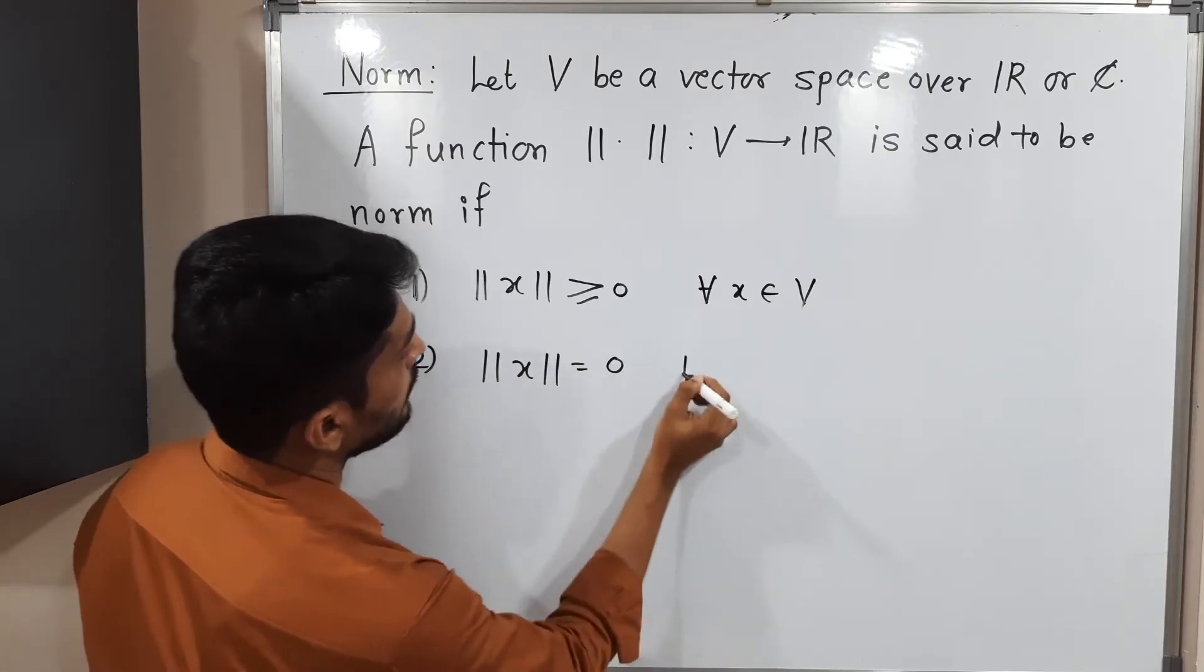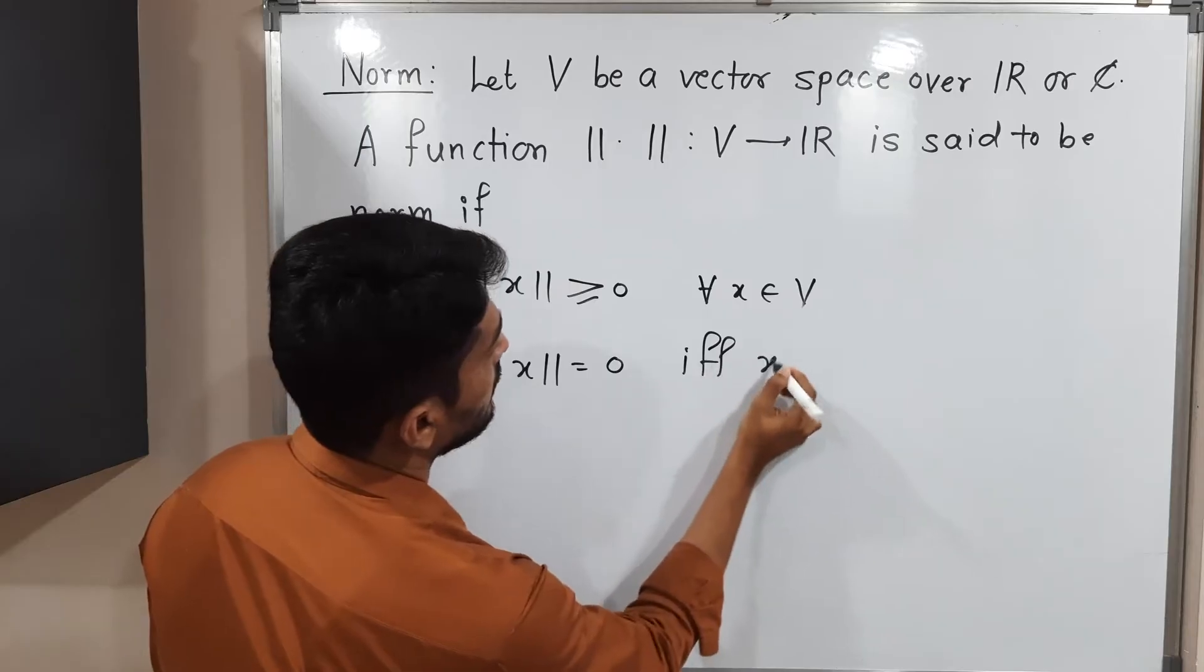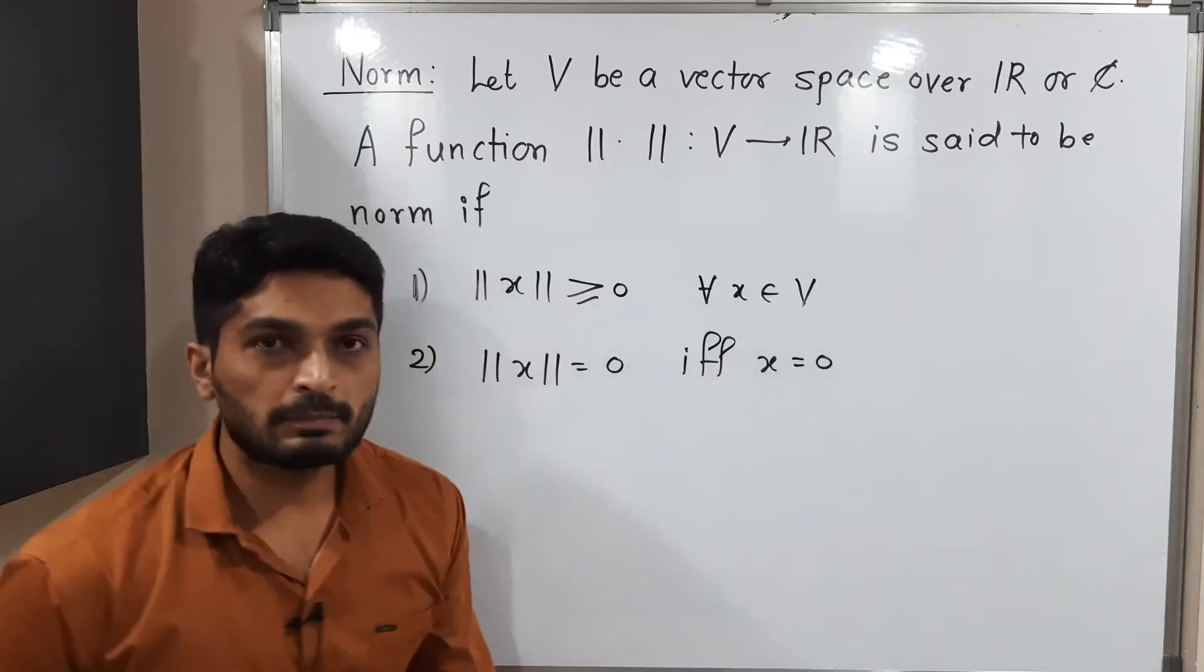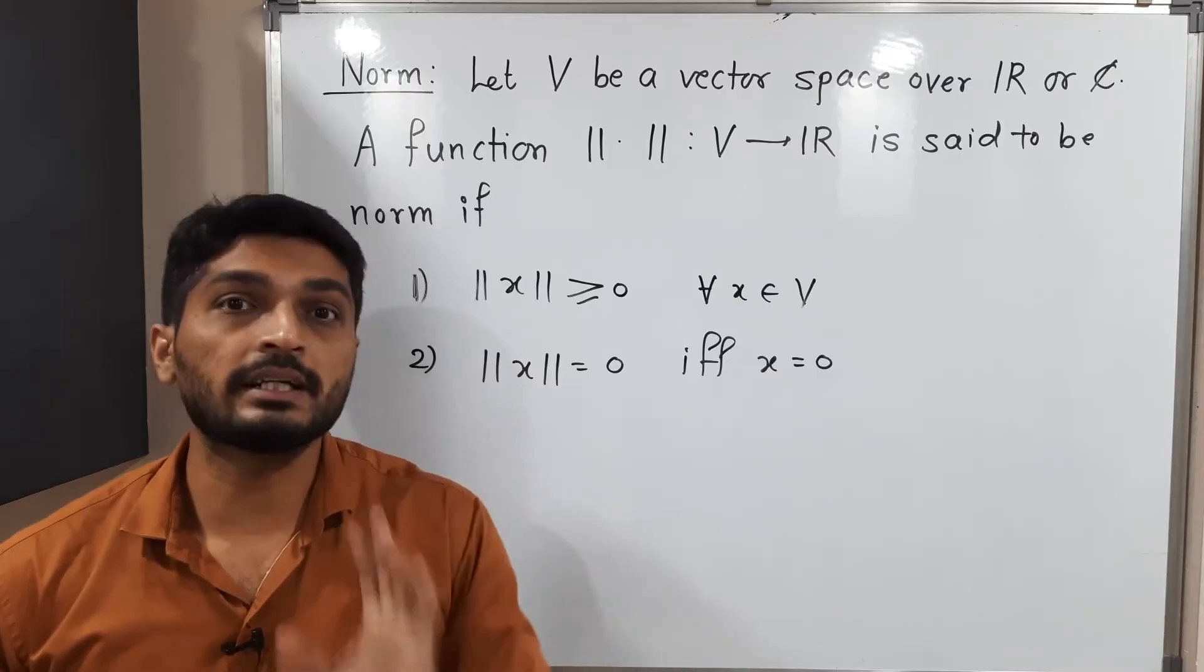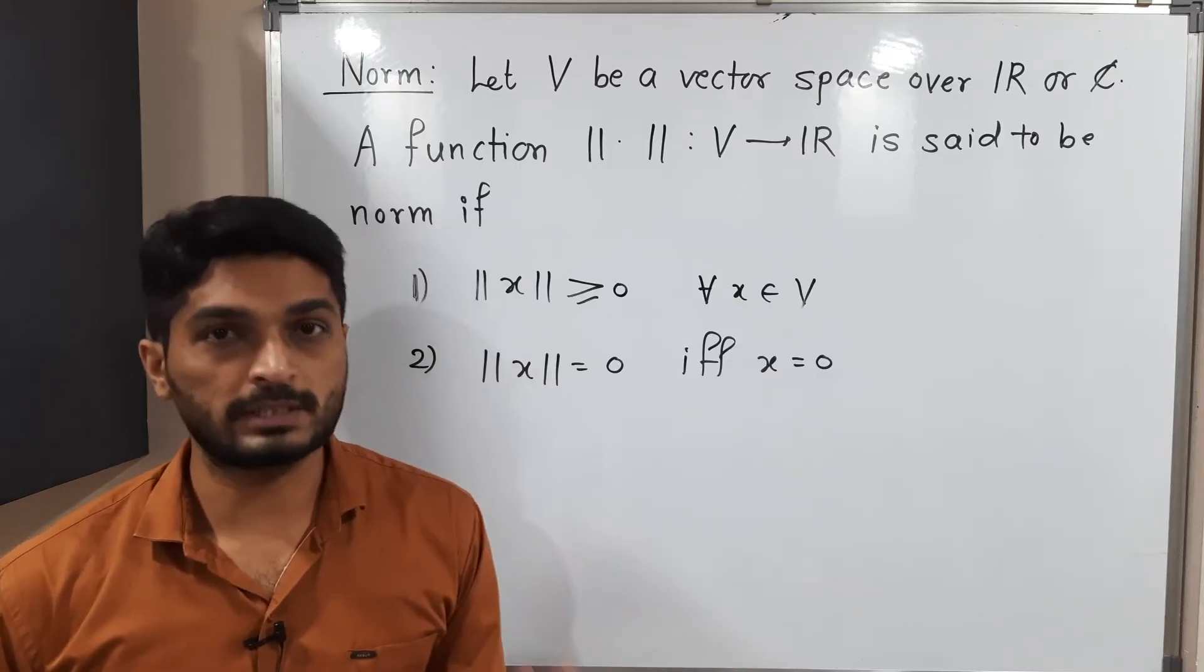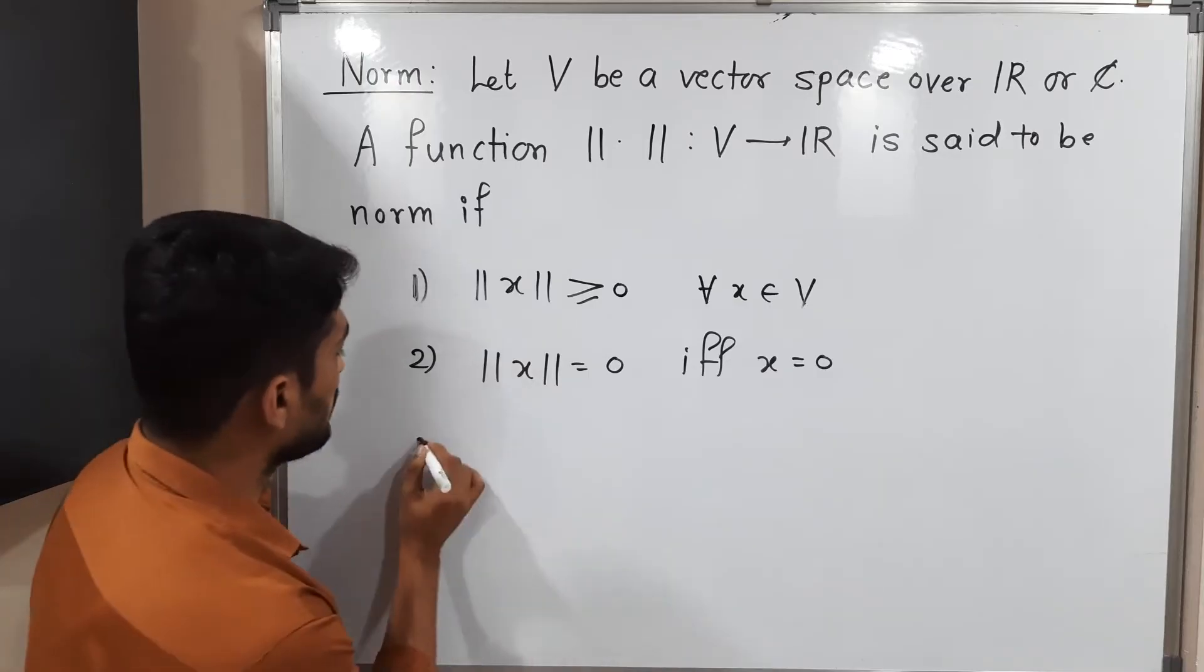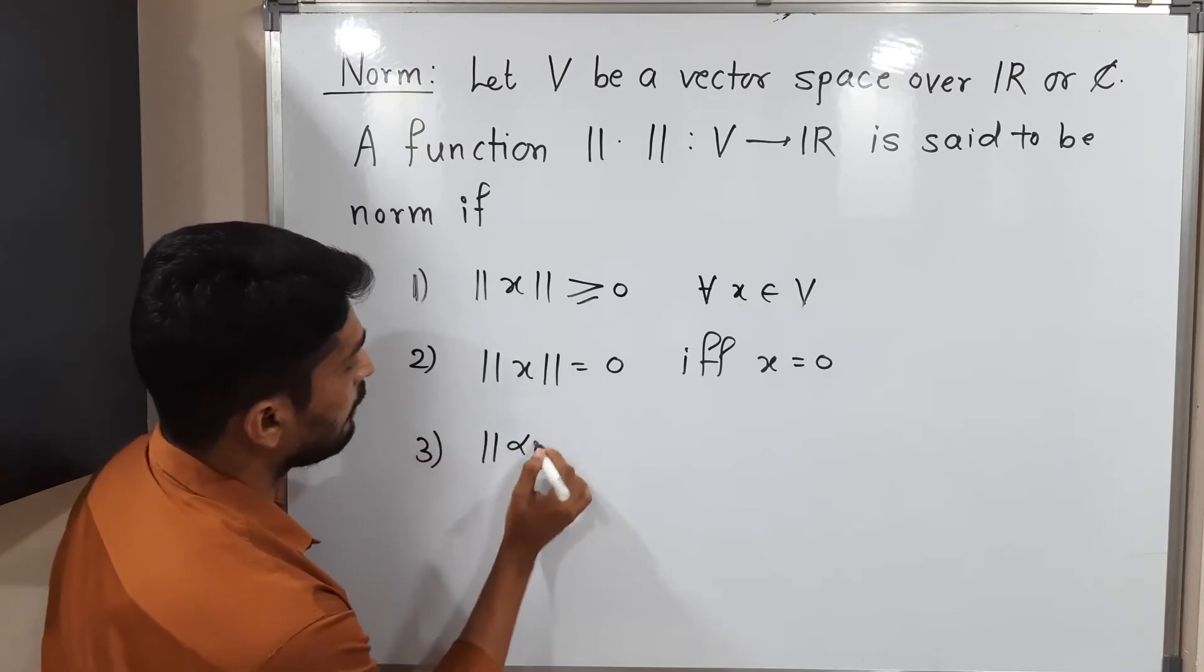The second condition is: norm of X equals 0 if and only if X equals 0. That means norm of any element is 0 only if that element is 0.